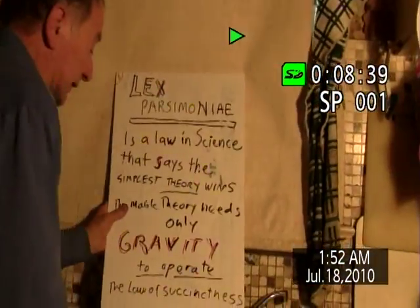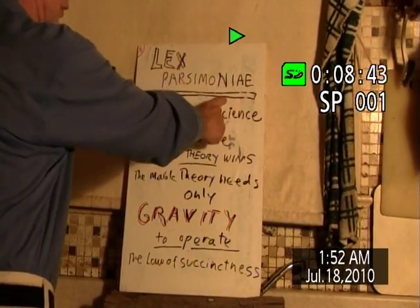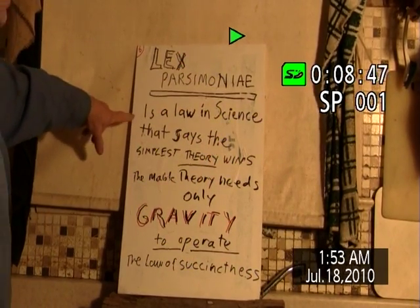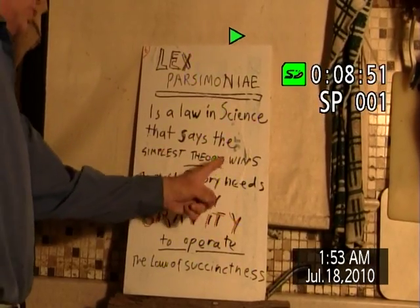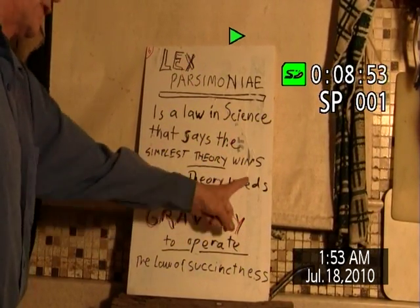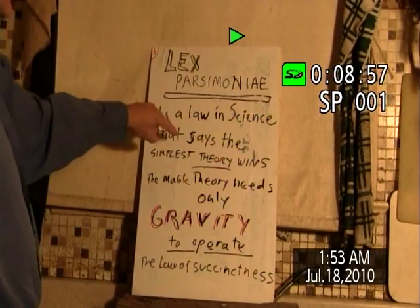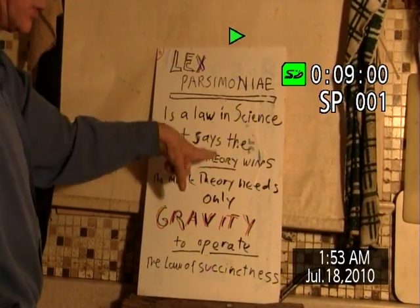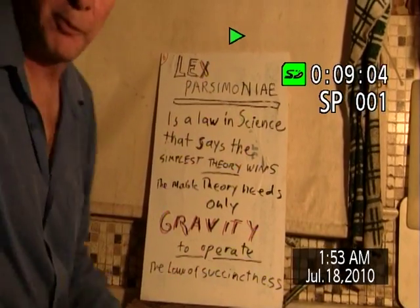Now look — this is important. There is a law. This is Latin: Lex Parsimonie. It is the law of succinctness — a law in science that says the simplest theory wins. The Mabel theory needs only gravity to operate. This is what is really happening to the universe. I am Peter Lamont, and that is the Mabel theory.